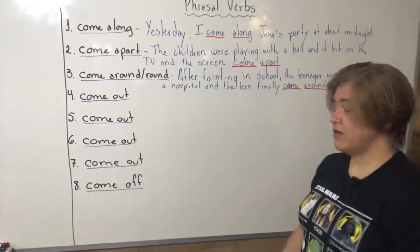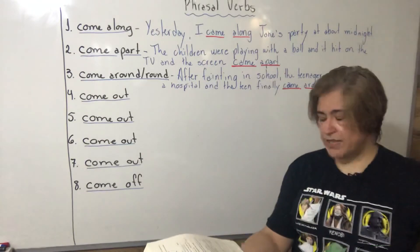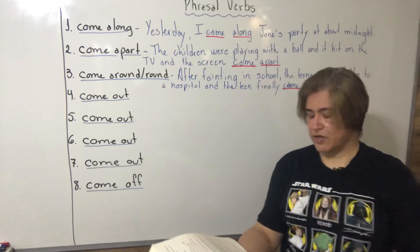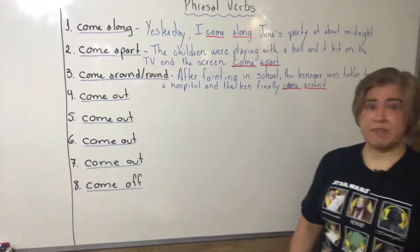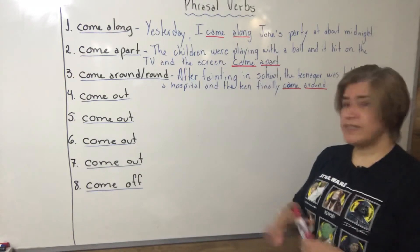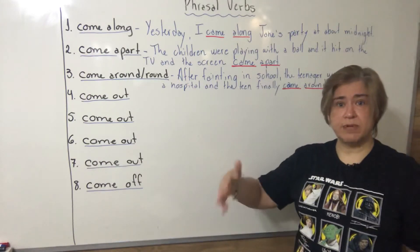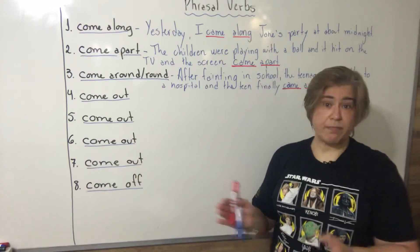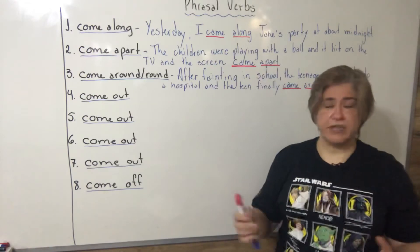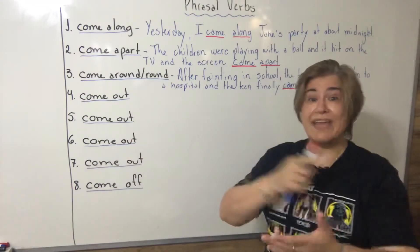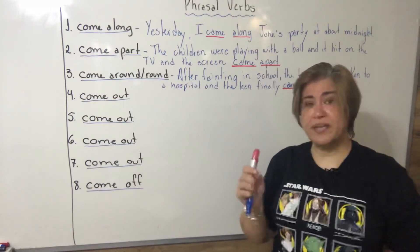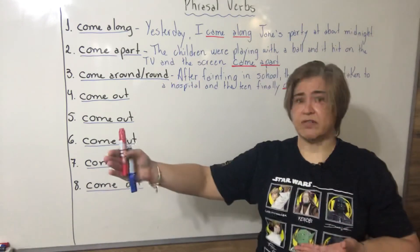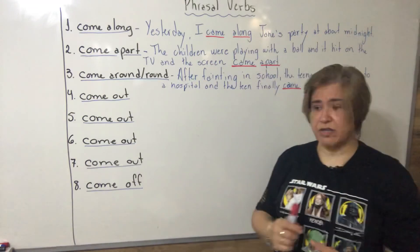Next, phrasal verb number four: 'come out,' meaning: become public knowledge after something has been kept secret. There are many possible meanings of 'come out,' but I've singled out this one. Pay attention to the subject — it's not you, it's the information that comes out. You are not the information.